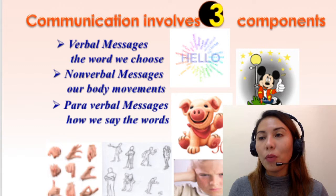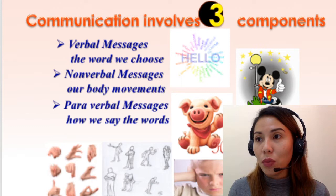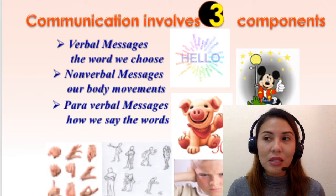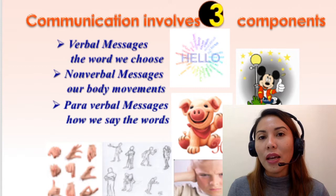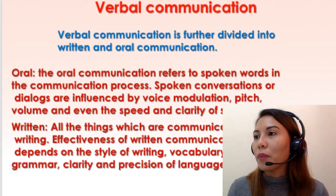Communication involves three components. First, we have verbal messages, which refers to the words we choose. Second, we have nonverbal messages, which includes our body movements. And the third one is paraverbal messages or paralanguage — it's basically how we say what we say. Let's talk about all three components.